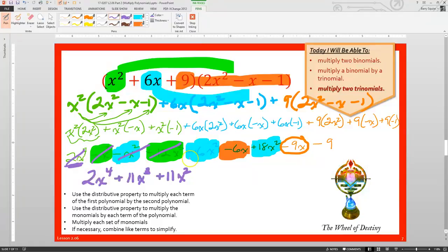Get the orange ones. Negative 6x minus 19, excuse me, minus 9x, that's minus 15x. Got them, and now we have negative 9. Okay, so our resulting polynomial is 2x to the fourth plus 11x cubed plus 11x squared minus 15x minus 9.